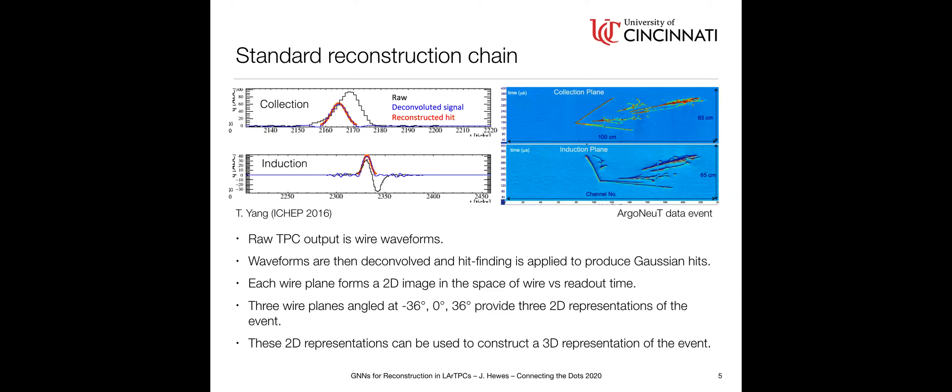In terms of reconstruction, you're reading out waveforms from wires, but you can do some low level reconstruction on that. First you deconvolve your waveform. Specifically for the induction planes, because the electrons are traveling past the wire plane, you get a bipolar signal. So you deconvolve to get back to a unipolar signal. Then you run Gaussian hit finding. You've basically transformed from raw waveforms to a set of Gaussian hits in wire and time. Then you can take those three 2D images and reconstruct them back to a 3D one.